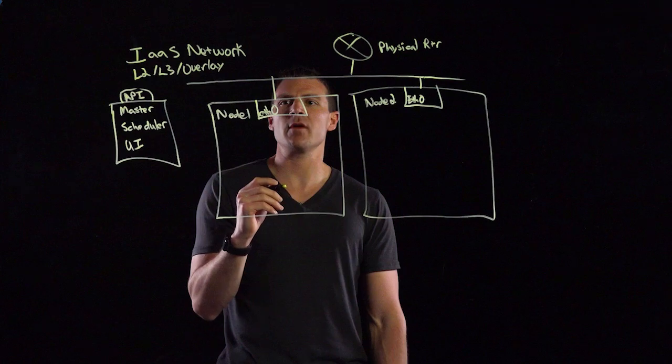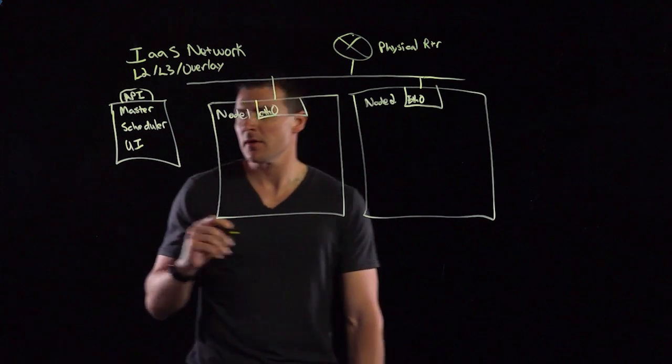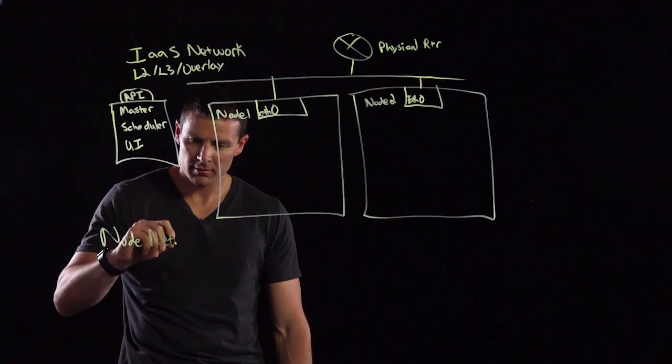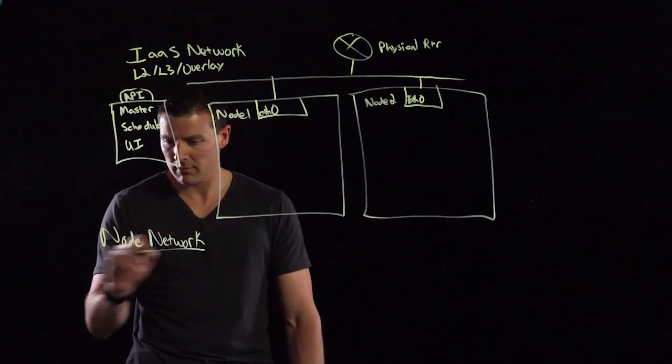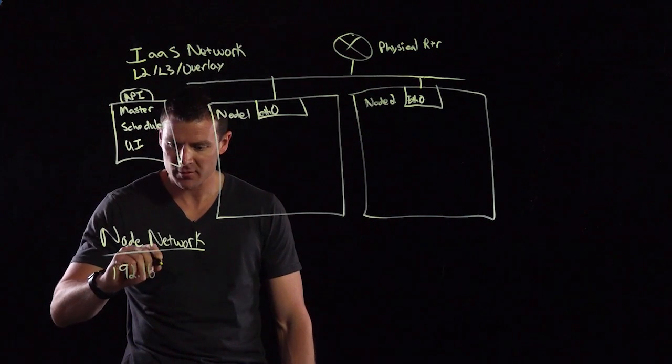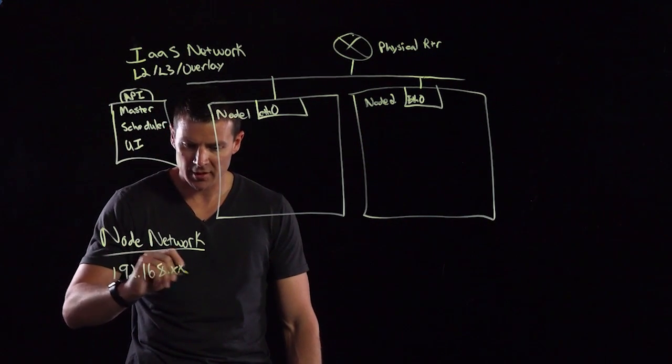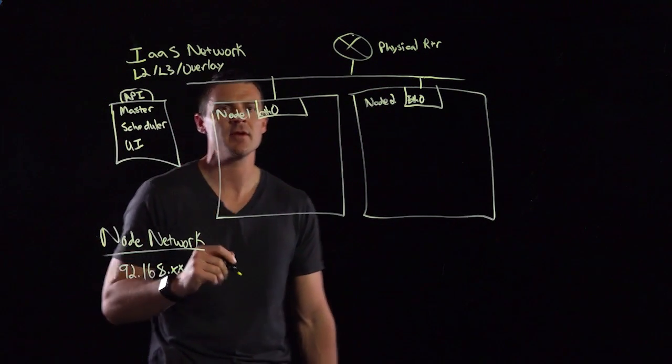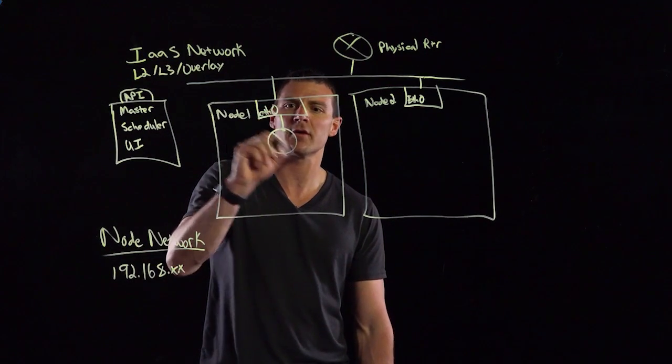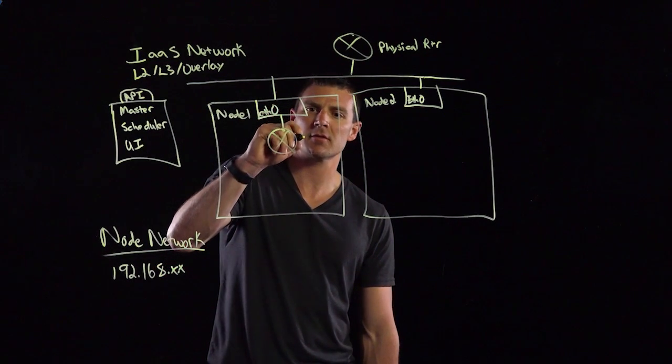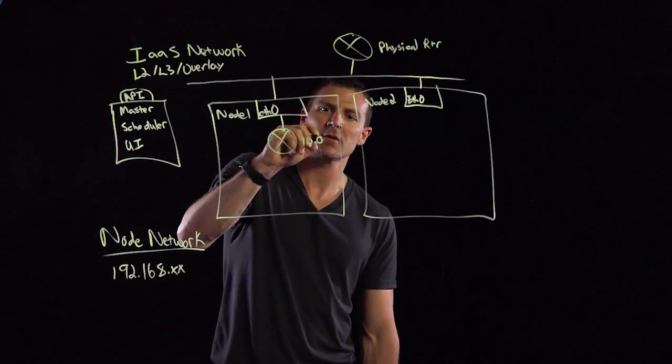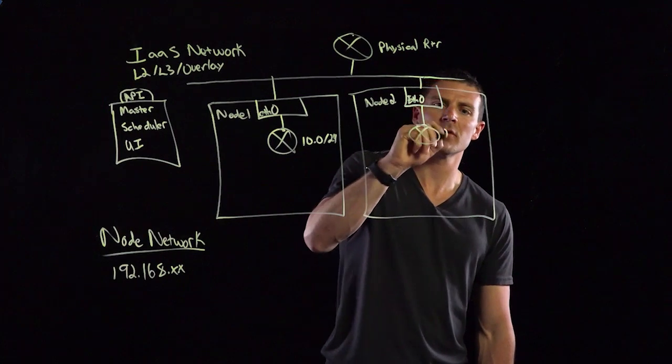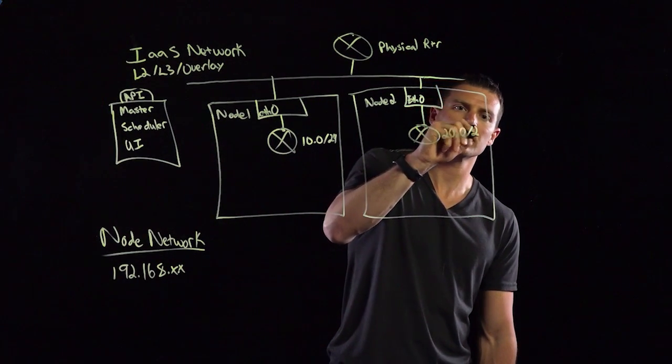After that, we go down to what's called node networking. This is where we assign a CIDR block. For the purposes of this talk, I'm going to use 192.168.x.x. You can really think of each of the worker nodes as an IP router. This one we'll choose 10.0 slash 24, and then this one we're going to choose 20.0 slash 24.